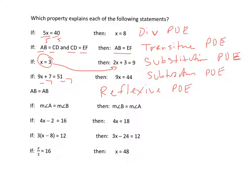If measure of angle A equals the measure of angle B, then B equals A. This is known as the symmetric property of equality because you're just flipping it. It's the same on each side.